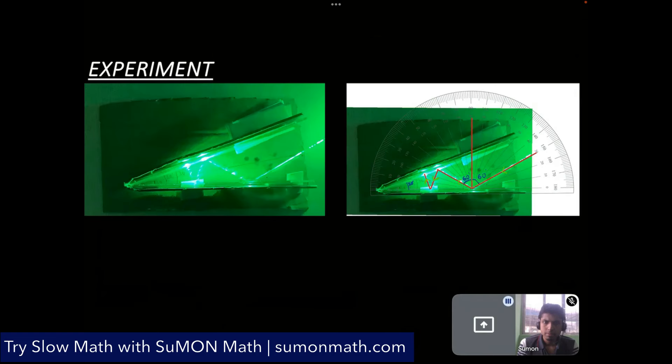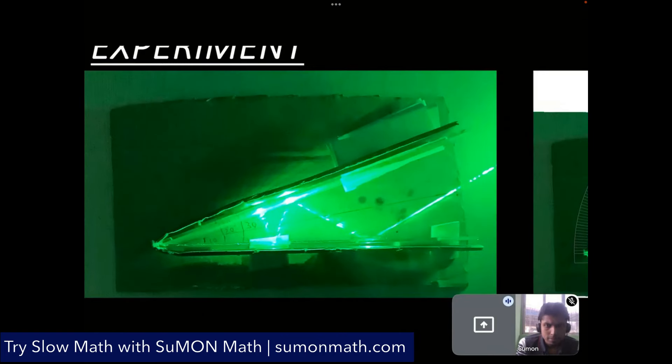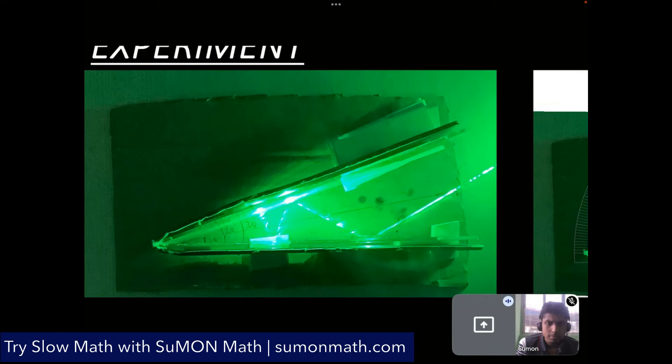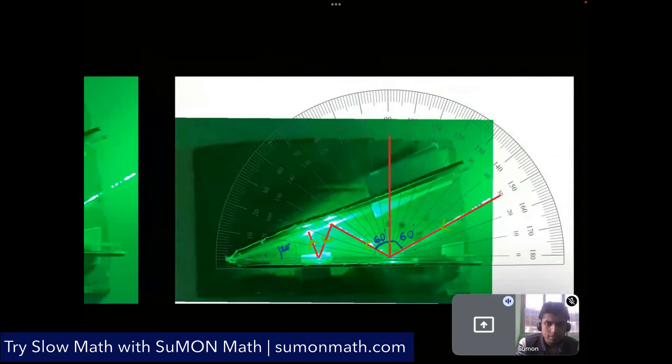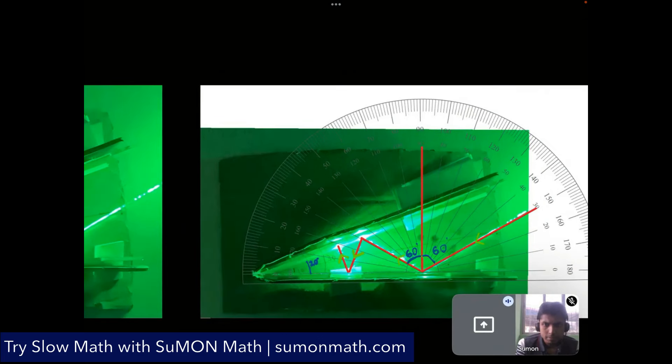And this is the experiment. So it almost looks like the diagram that we saw before. So there are four incidents in this one. And we are using a green laser torch to shine this. And then we can finally use a protractor to measure the angle. So the angle between the two mirrors is 20 degree. And the angle of incidence is 60 degree. So the ratio between 60 degree and 20 degree is 3, which matches our theoretical observation.